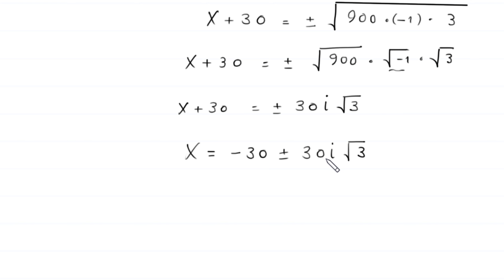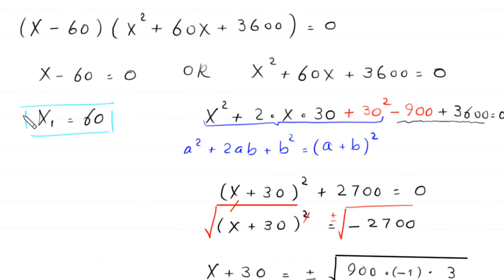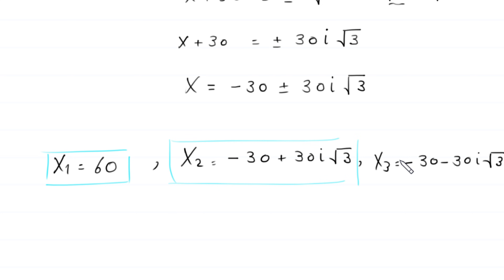From here we get three values of x. x₁ equals 60 — which we found first. x₂ equals negative 30 plus 30i times the square root of 3, and x₃ equals negative 30 minus 30i times the square root of 3. So we have three solutions to this equation: 60, negative 30 plus 30i√3, and negative 30 minus 30i√3.